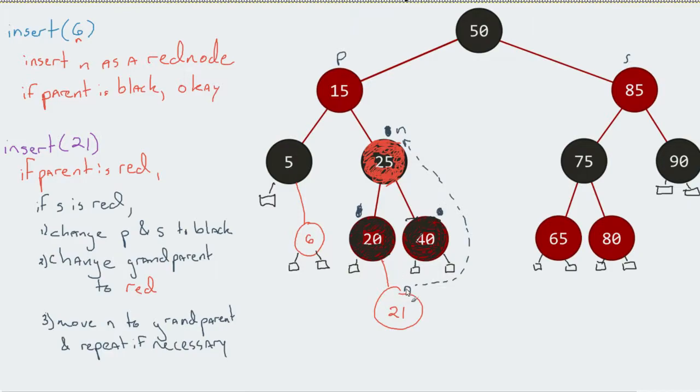Reason being is because if I scrap them out, I make that same assessment. Well, my parent happens to be red. My parent's sibling happens to be red. And so, just like we've seen in the past, I would change my parent and my parent's sibling to black.